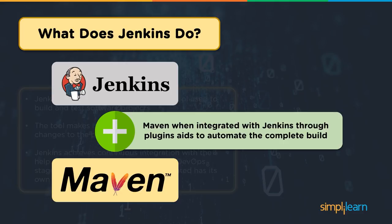In Jenkins, you have to install the Maven plugin, and once the plugin is installed you can proceed with the configurations and setup. This plugin helps you to build Java-based projects available in Git repositories. Once that is done, you will be able to process a complete integration of Maven within Jenkins.